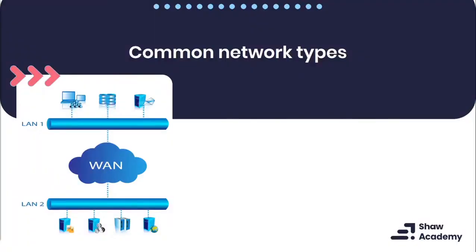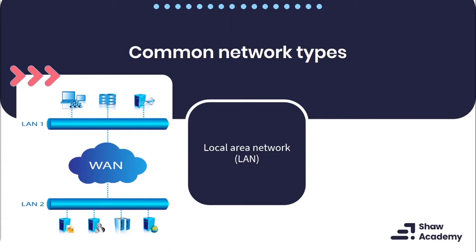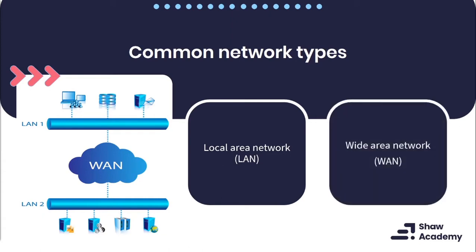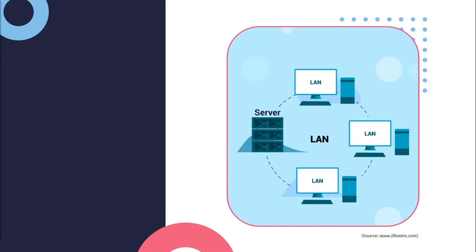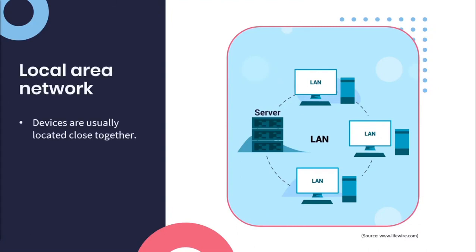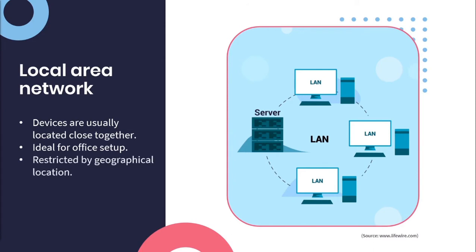There are two common types of networks you need to focus on: a local area network, otherwise known as a LAN, as well as a wide area network, also known as a WAN. With a LAN, devices are usually located close together, and this is ideal for office setups, home setups, or a network within a building or on a particular floor. LAN is also quite popular when it comes to gaming tournaments. One of the biggest differences between LANs and WANs is that a LAN is restricted by geographical location, meaning it can't span a huge area.